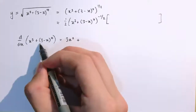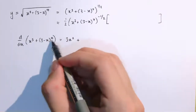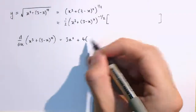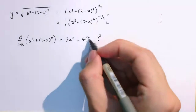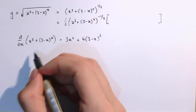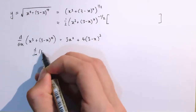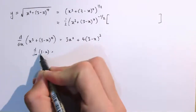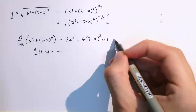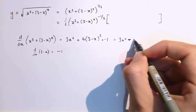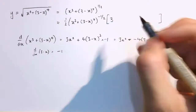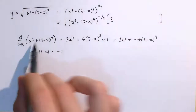Within 3 minus x to the 4, the x to the 4 is the outside function, so I'm going to get 4x cubed, but it's not x, it's 3 minus x. And now I've got to multiply by the derivative of 3 minus x. That differentiates to 0 and minus 1, so it's just times minus 1. So this is 3x squared minus 4 times 3 minus x cubed. That's the derivative of this whole inside function.